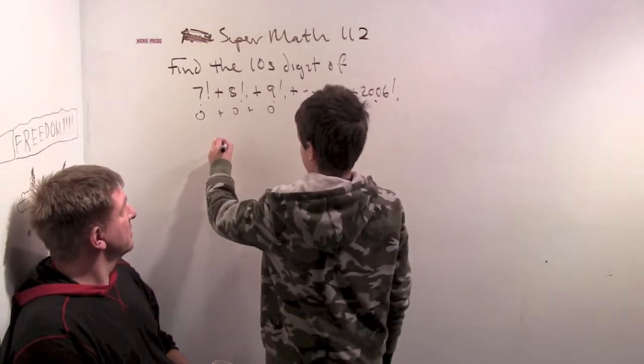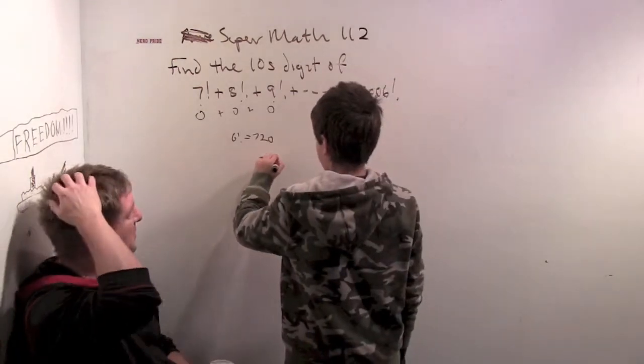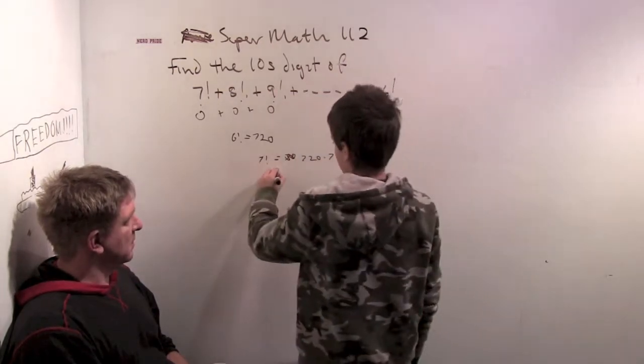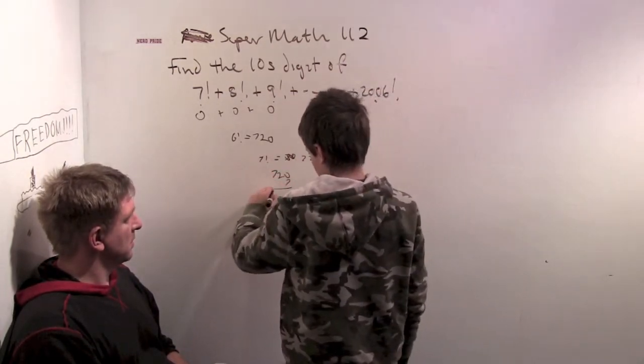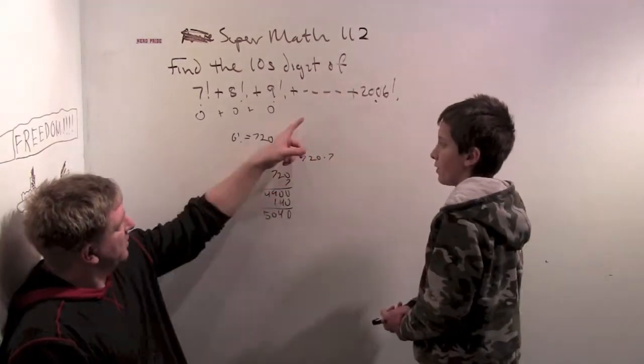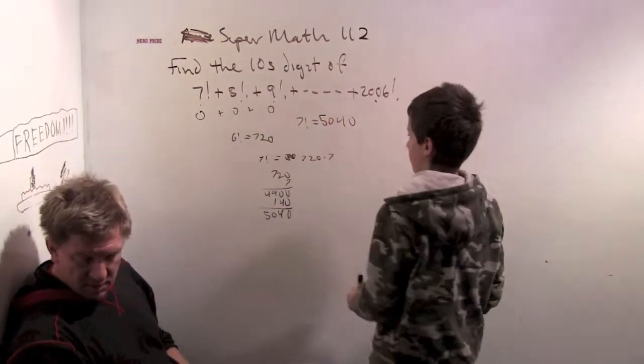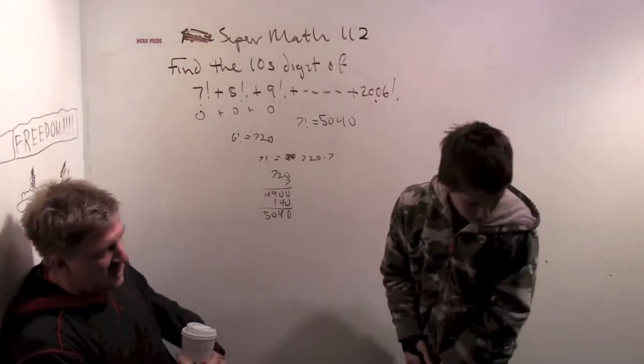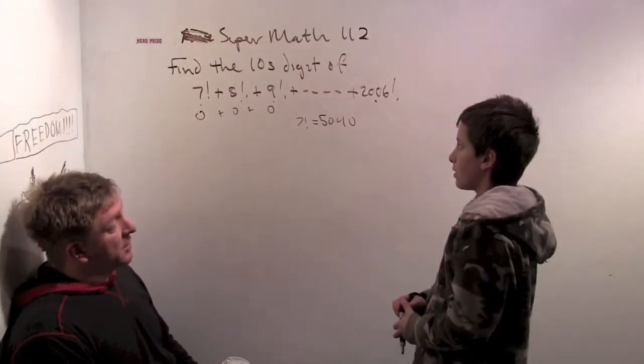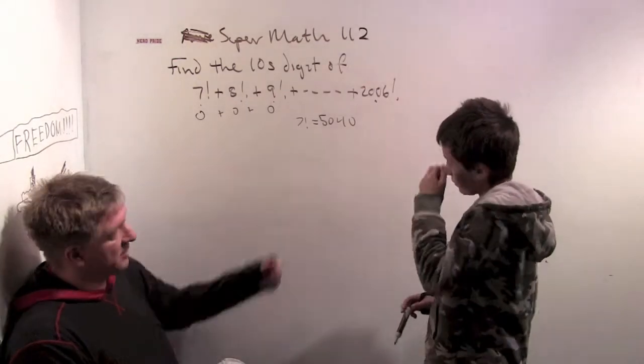So what is seven factorial? Seven factorial we can calculate. Well, six factorial is 720. So seven factorial is 720 times 7, which is 5,040. Seven factorial is 5,040, it ends in a zero, and that zero comes from the fact that we have a 5 and a 2 hiding inside seven factorial.